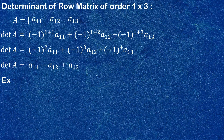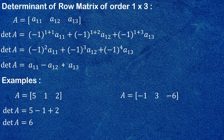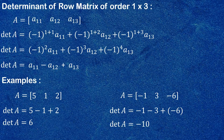Let's take an example. Take a matrix [5, 1, 2]. Its determinant is 5 − 1 + 2 = 6. Let's take another example: A = [−1, −3, −6]. Its determinant is −1 − (−3) + (−6) = −4. As you have noticed, the pattern goes plus, minus, plus — follow this pattern to understand it in an easy manner.